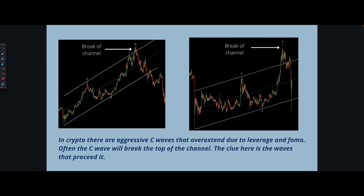As you can see, this aggressive C wave broke the top of the channel, but the clue before it is that we had a three-wave move — an A wave. If this wave was going to be an impulse wave, we would not have started with three waves.